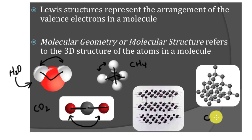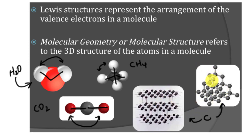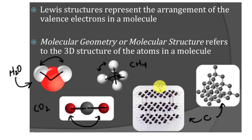Carbon can take on two different forms: diamond and graphite. Why does that happen? Because of the arrangement of the electrons in carbon, it allows it to form two different structures. Diamond is the hardest substance in nature, and graphite is a soft, slippery substance that you use in your pencils. That is all from the three-dimensional arrangement of the atoms in a structure.